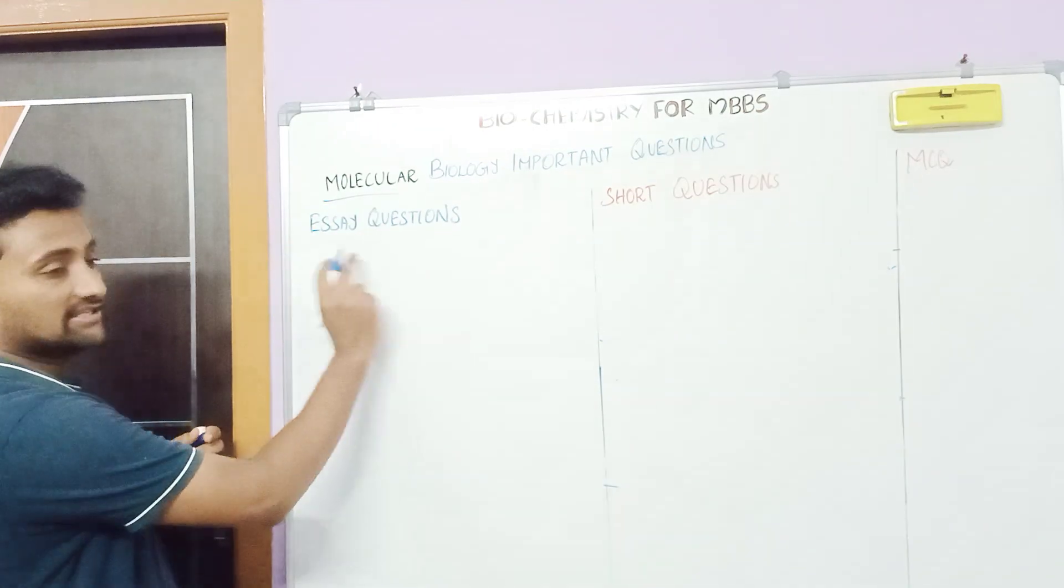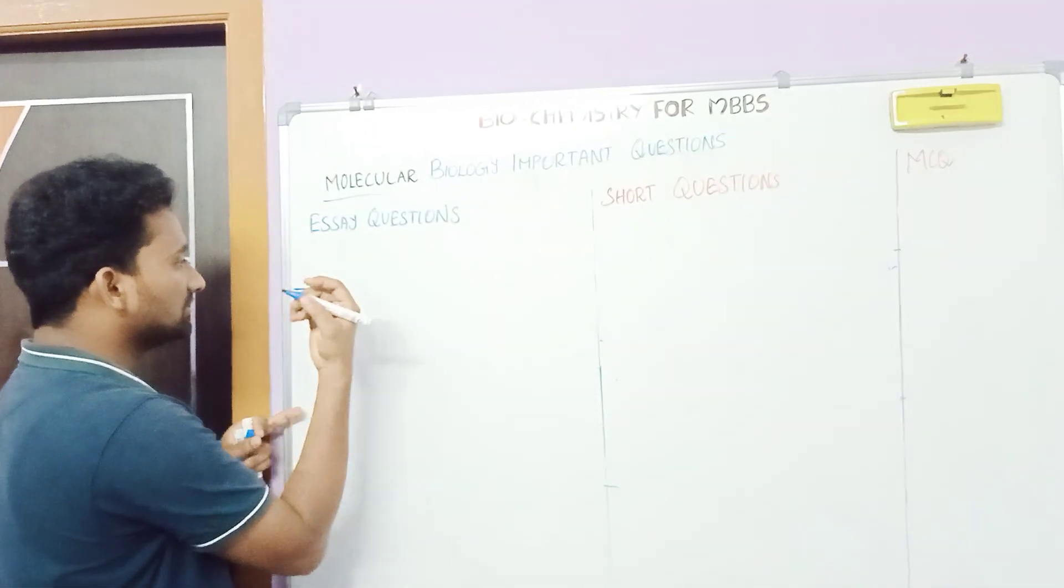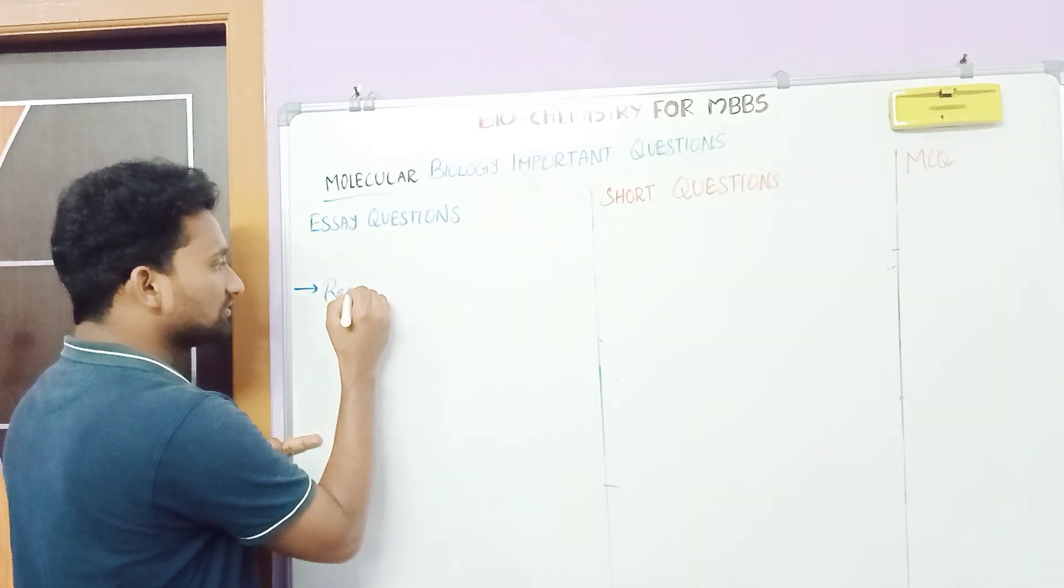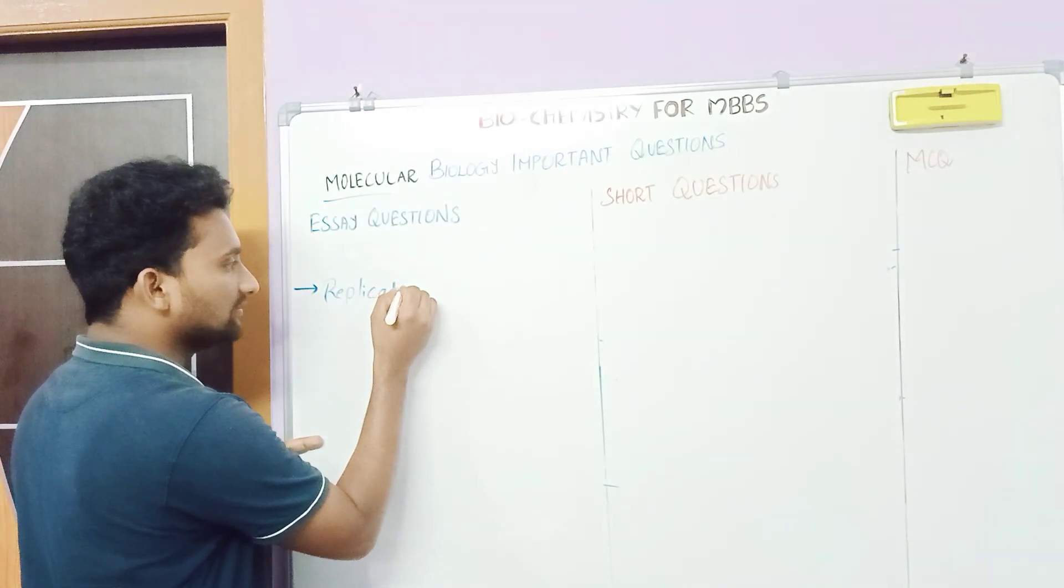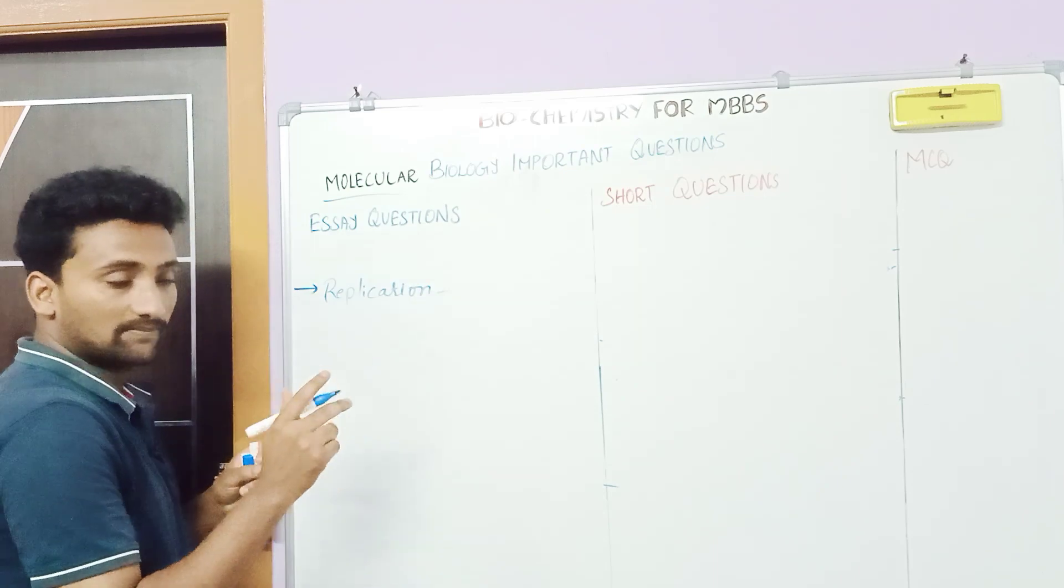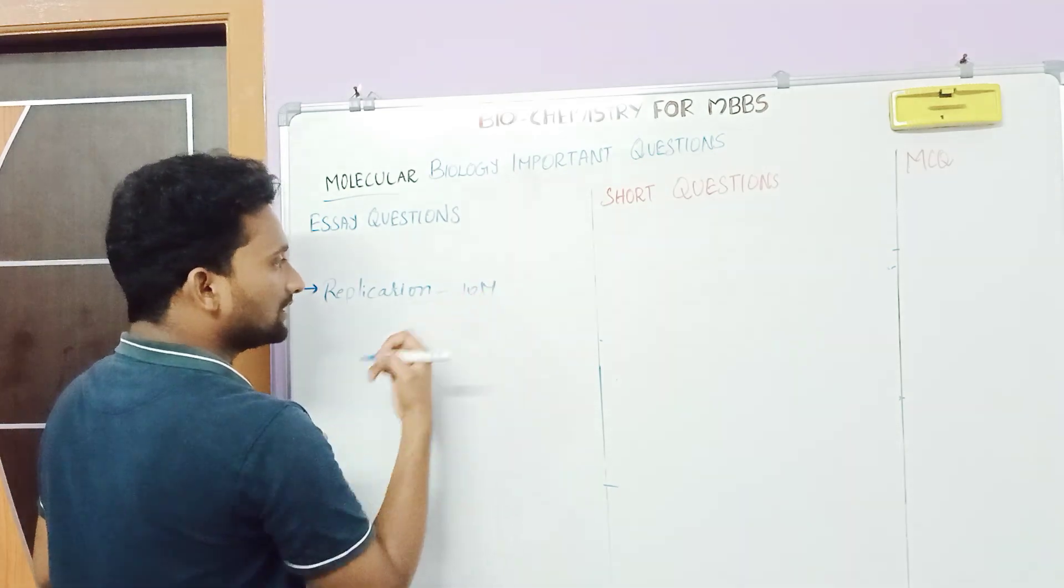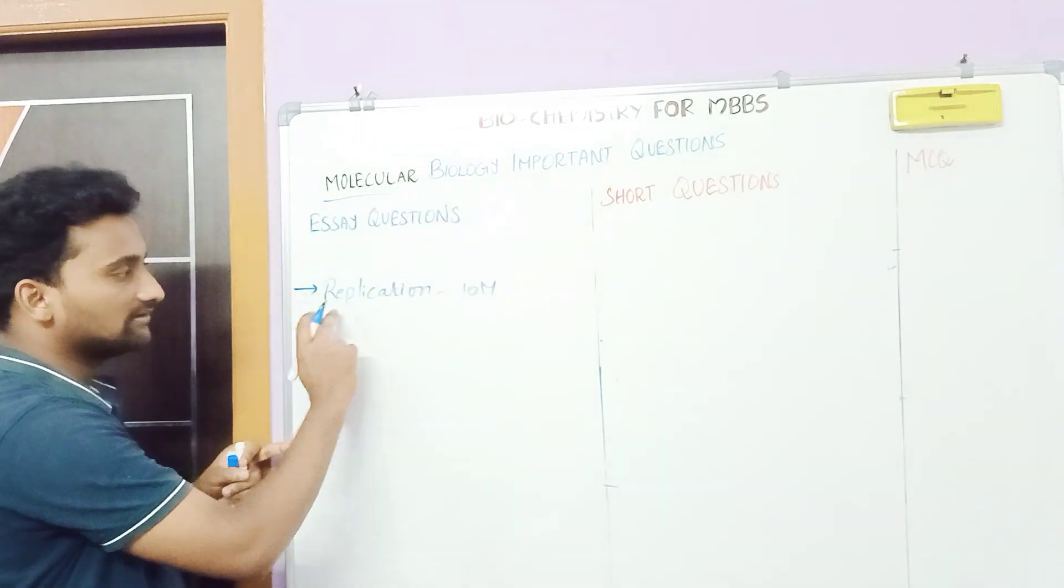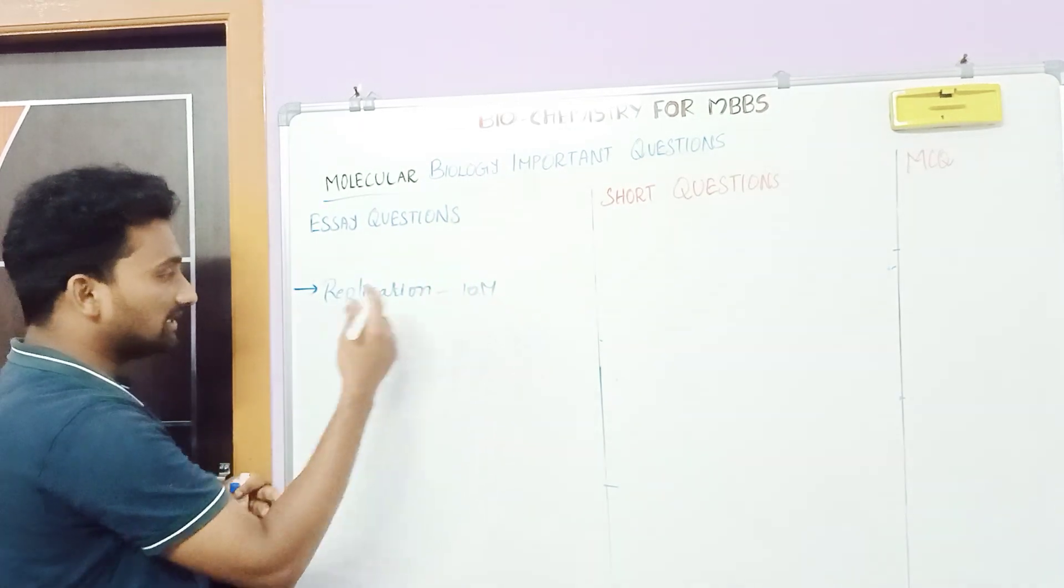So let's begin with essay questions. The first question, as we all know, is replication, which is very important for essay questions. So replication is 10 marks. Some universities offer 15 marks for essay questions, and here replication in our university is 10 marks.